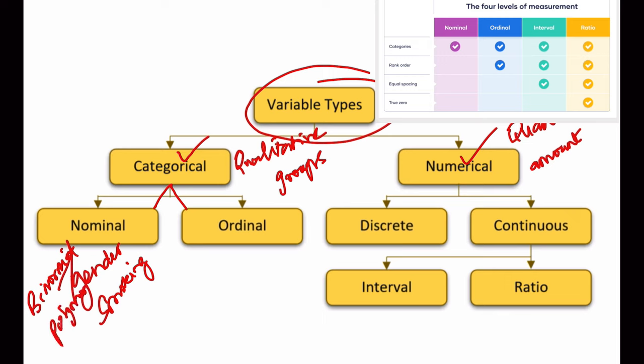Ordinal variables follow a rank order in their outcomes. It can be either a Likert scale, or it can be mild, moderate, severe in clinical classifications.